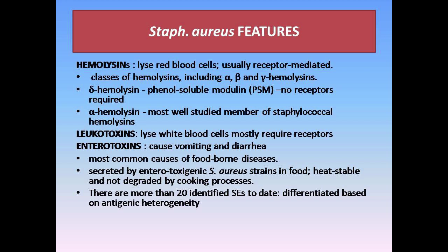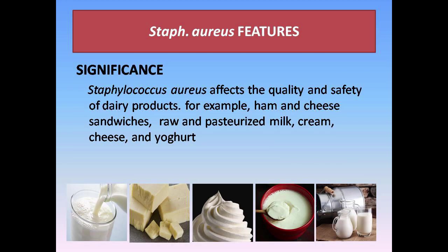They are differentiated based on antigenic heterogeneity. Staphylococcus aureus affects the quality and safety of dairy products, for example ham and cheese sandwiches, raw and pasteurized milk, cream cheese, and yogurt.